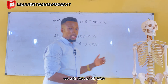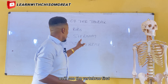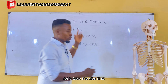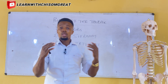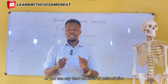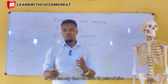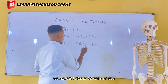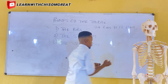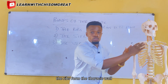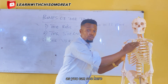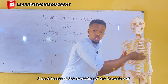We'll first look at the rib. In the thorax or in the human body, we have about 24 ribs, or you can say that we have 12 pairs of ribs. The rib forms the thoracic wall — it contributes to the formation of the thoracic wall. On the left side we have 12, and on the right side we have 12.